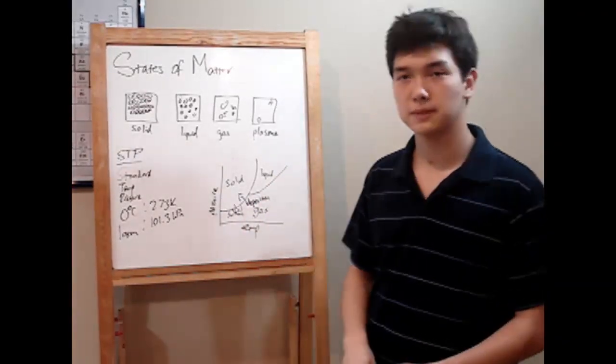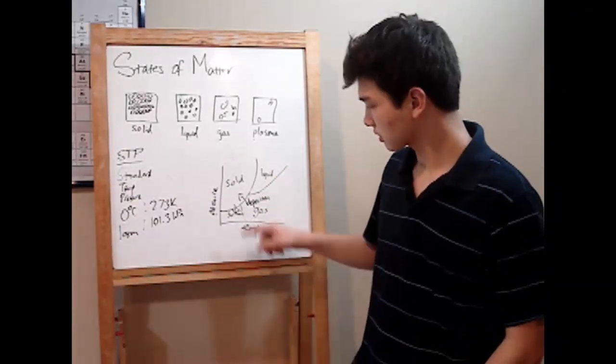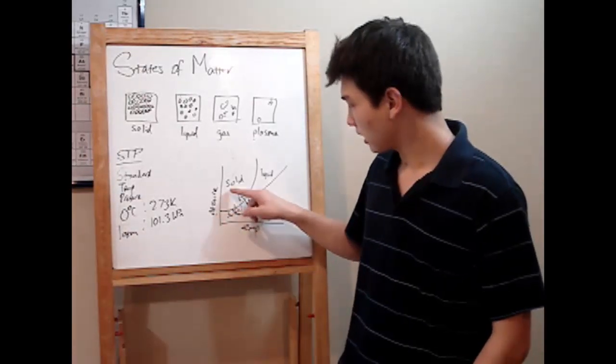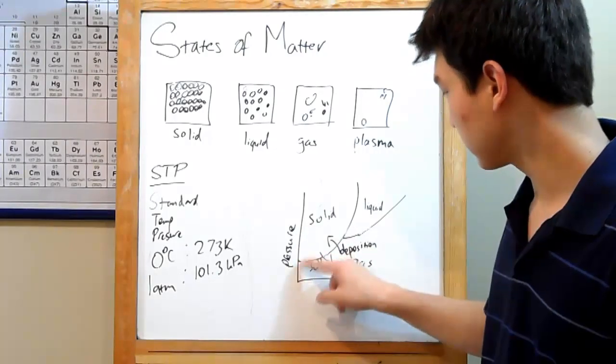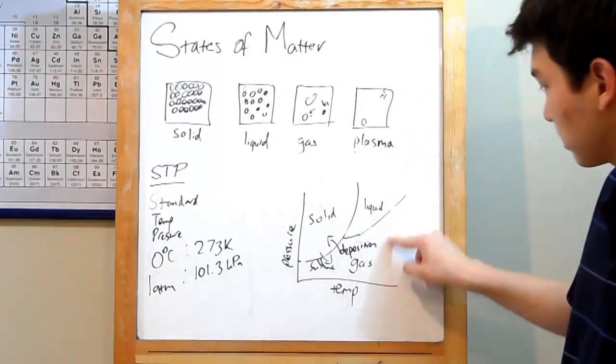But what if you kept your temperature constant instead, and started changing your pressure? As your pressure decreases, you can go from a solid to a gas, solid to liquid to gas, or even a liquid to gas.